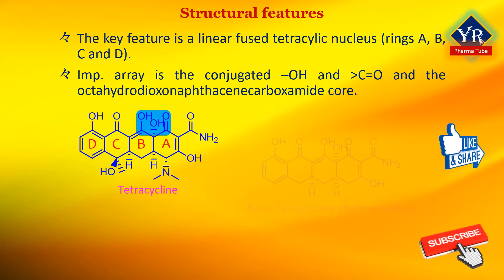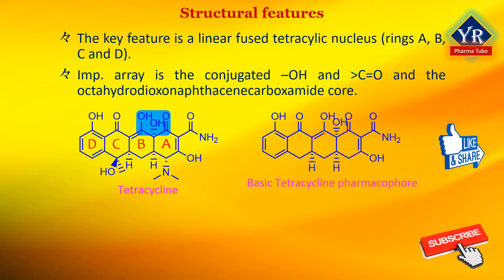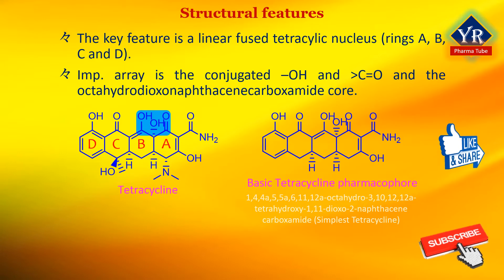The simplest tetracycline to display detectable antibacterial activity is 1,4,4A,5,5A,6,11,12A-octahydro-3,10,12,12A-tetrahydroxy-1,11-dioxo-2-napthazine carboxamide, and so this compound may well represent a minimum pharmacophore.